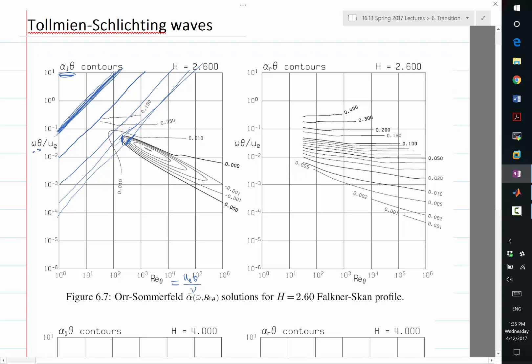That is this location, right? So if you draw a tangent down to here, that is the Re theta. So your boundary layer has to be at least this thick.